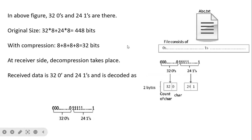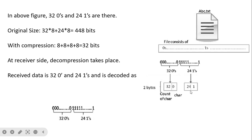Using RLE, we store the zero information in two bytes and the ones information in two bytes. For zeros: 32 (the count) is stored in one byte and the pixel value zero is stored in another byte — this is the RLE packet (count, then character). Similarly, 24 ones are stored in two bytes. So after compression, only 4 bytes, that is 32 bits, are required.